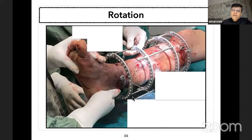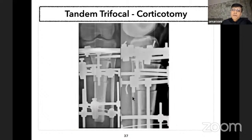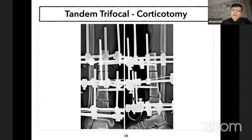To prevent rotation: once the proximal reference wire is applied and tensioned, when inserting the distal reference wire I hold the foot myself and ask my assistant to apply tension, because the surgeon will have better assessment of rotation than the assistant. Proximal and distal corticotomies are metaphyseal in converging trifocal osteosynthesis, while in tandem trifocal there is a metaphyseal and a diaphyseal corticotomy.